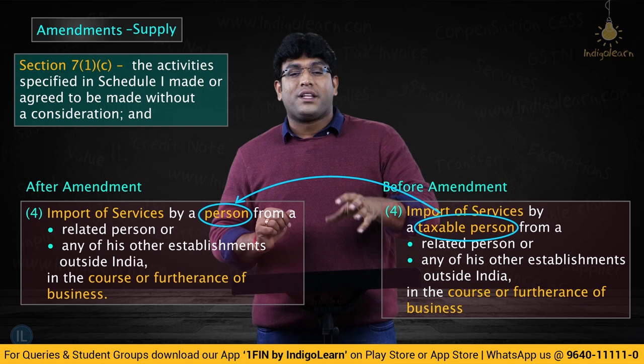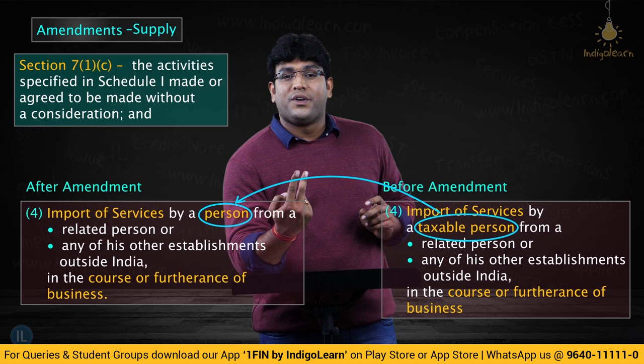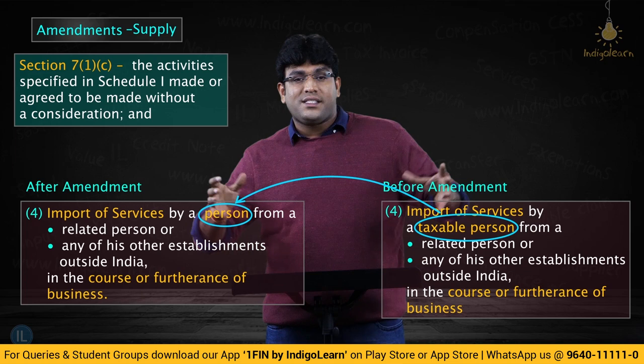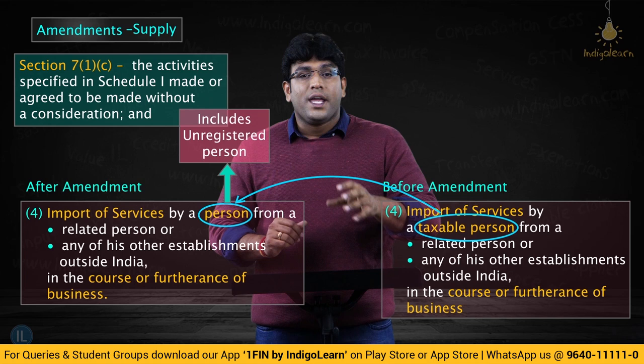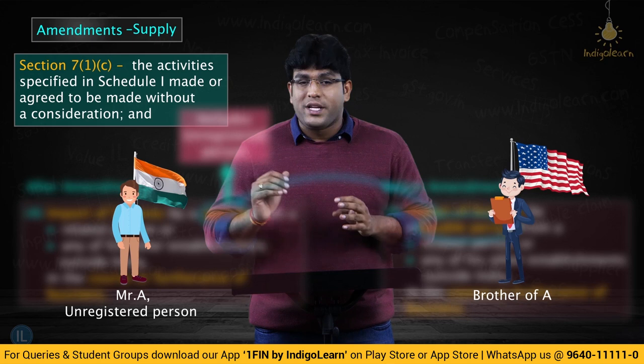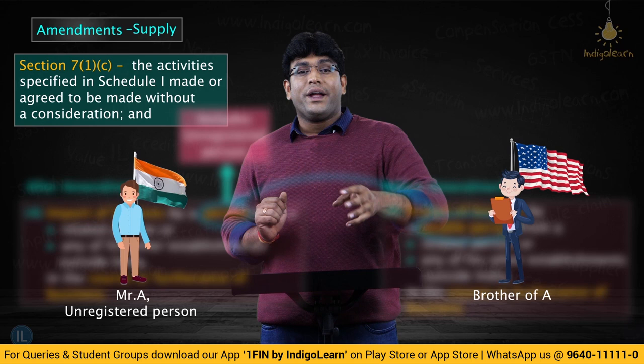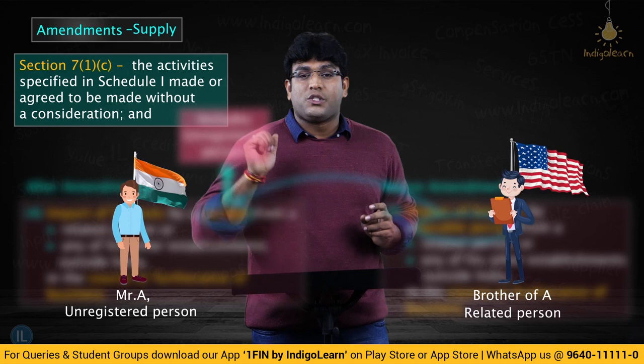That actually makes a big difference. 'Taxable person' means any person registered or liable to be registered. But if we just say 'a person,' that can even cover an unregistered person. Imagine a case where there is an unregistered person whose brother is in the US — an architect — and that brother is dependent on this person. When he is dependent, he will be called a related person, because related person also covers members of the same family. Family defined by section 249 specifies that family is divided into two parts: spouse and children; and parents, grandparents, brothers and sisters, if they are wholly or mainly dependent on the individual.